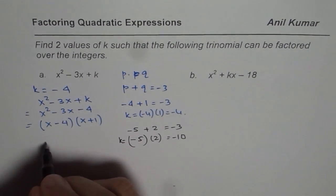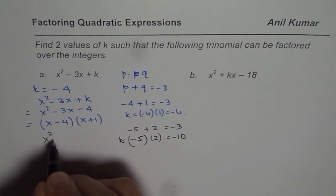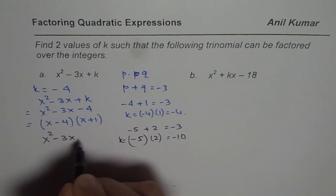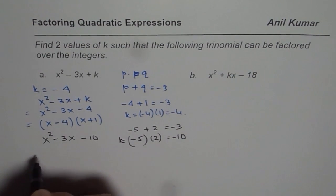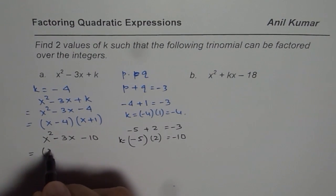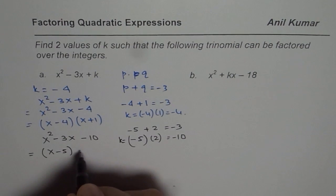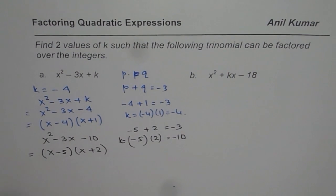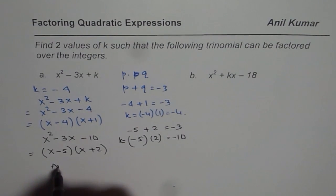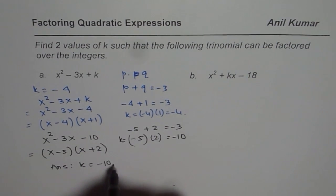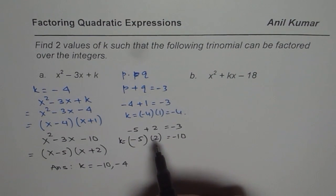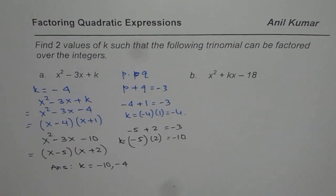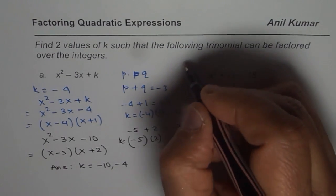Let me write k as minus 10. I get my equation as x squared minus 3x minus 10. This can be factored as x minus 5 times x plus 2. So I have given two answers and my answers are k could be equal to minus 10 or minus 4 as I have shown. Likewise, we can have infinite number of values for k in this particular position.